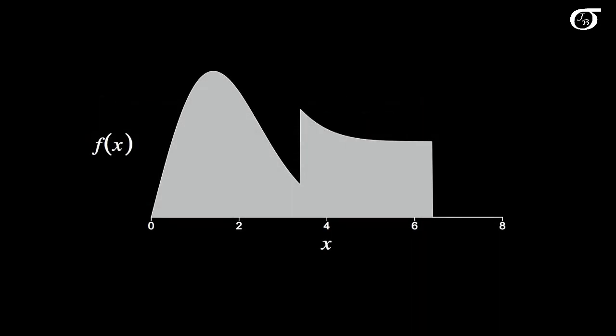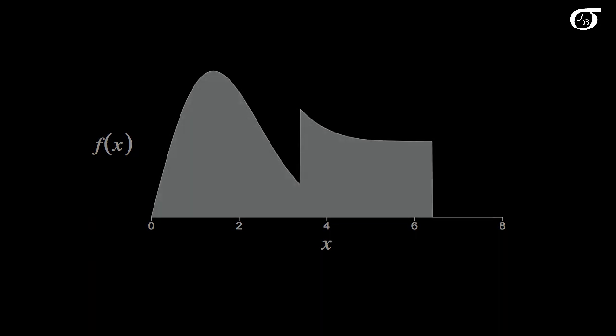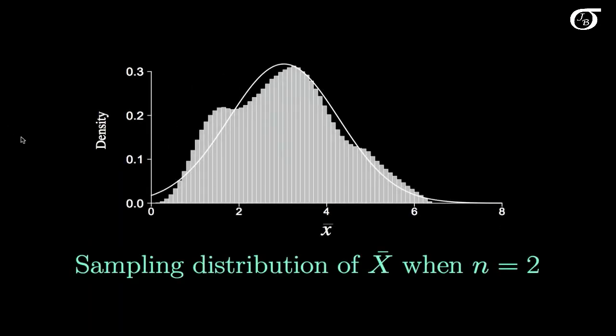Let's look at another scenario. Here we've got a different distribution — a bit of a funky little mixture distribution. If I do the same thing as before and take a sample of size 2, calculate the sample mean, and do that repeatedly, this histogram is representing approximately the sampling distribution of X-bar, with a superimposed normal curve. In this scenario, it doesn't look all that normal — when our sample size is 2, that's not enough to give us approximate normality.